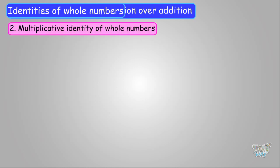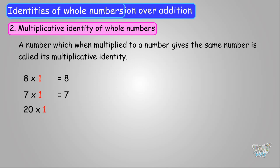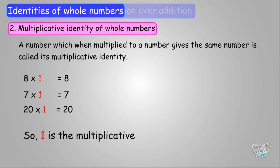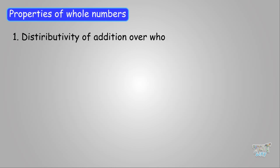So 0 is the additive identity for whole numbers. Now, the multiplicative identity is a number that when multiplied with any number gives the same number. For whole numbers this is 1: 8 times 1 is 8, 7 times 1 is 7, 20 times 1 is 20. So any number multiplied with 1 is the same number — 1 is the multiplicative identity for whole numbers. So friends, we have learned two properties of whole numbers: the Distributive Property of Multiplication over Addition and the identities of whole numbers.